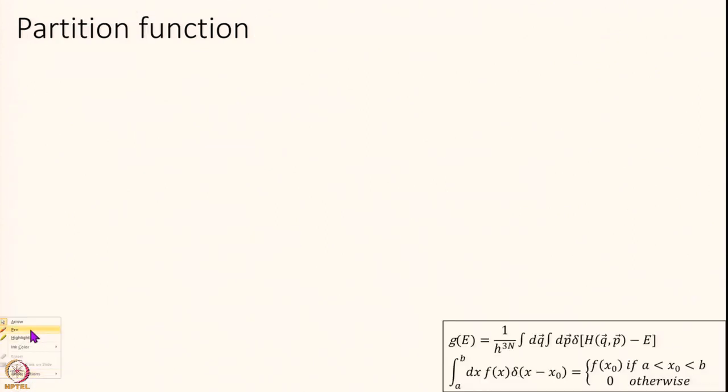G essentially represents the number of states at that energy. At some energies I might have many more states, so my rho is higher, my overall density is higher. It is a product, but I must also normalize it properly. Let us look at this denominator.